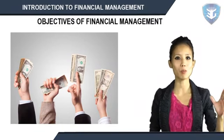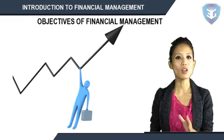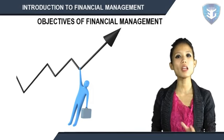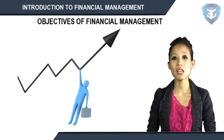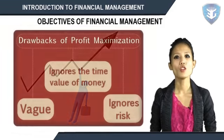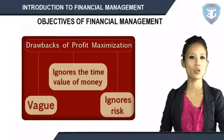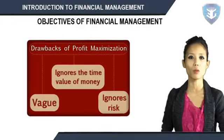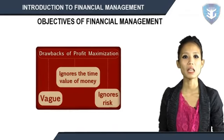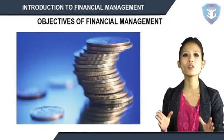Unfavorable arguments for profit maximization: profit maximization leads to exploiting workers and consumers, it creates immoral practices such as corrupt practices and unfair trade practices, and its objectives lead to inequalities among stakeholders such as customers, suppliers, public, and shareholders. Drawbacks of profit maximization: it is vague, it ignores the time value of money, and it ignores risk.